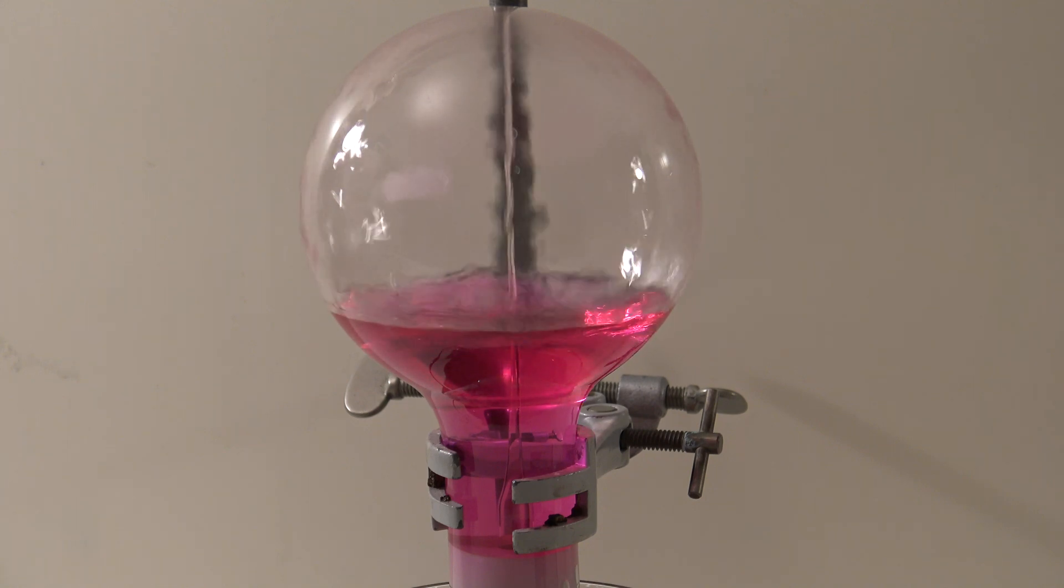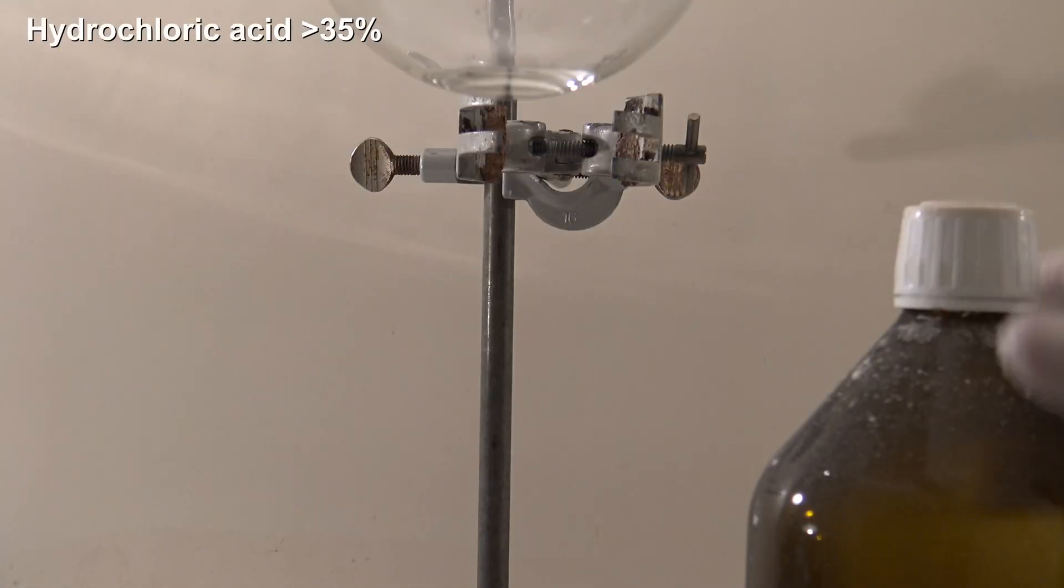To do the experiment with hydrogen chloride concentrated hydrochloric acid can be used in the simple method. So it needs to have a concentration of above 35%.